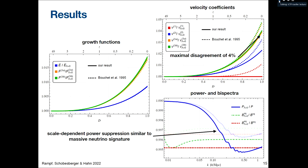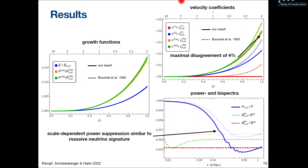The effect on power and bispectra is less than 1%, but it shows a scale-dependent power suppression similar to massive neutrino cosmologies, which could be relevant in corresponding pipelines. The take-home messages: exact analytical growth functions now exist for the cold limit of a Lambda-CDM universe, implemented in monofonIC — an initial condition generator. There is a straightforward way to extend these techniques to more generic cosmologies, and we highly recommend using these growth functions for forward modeling, effective field theories, and neutrino cosmologies.